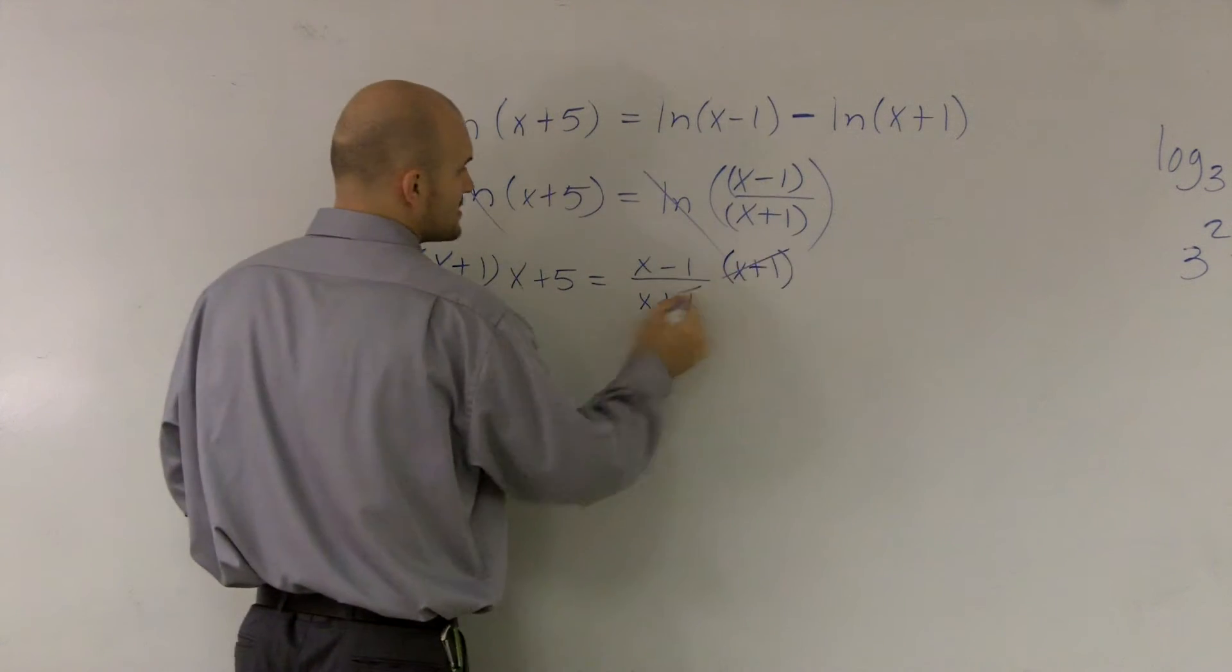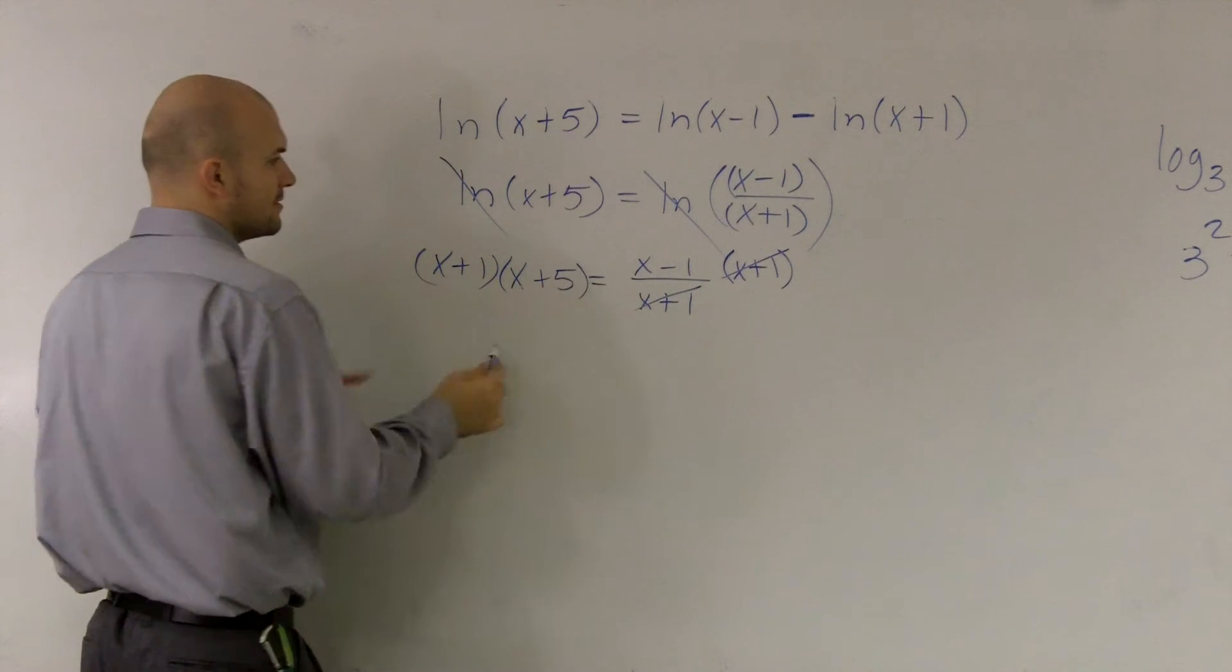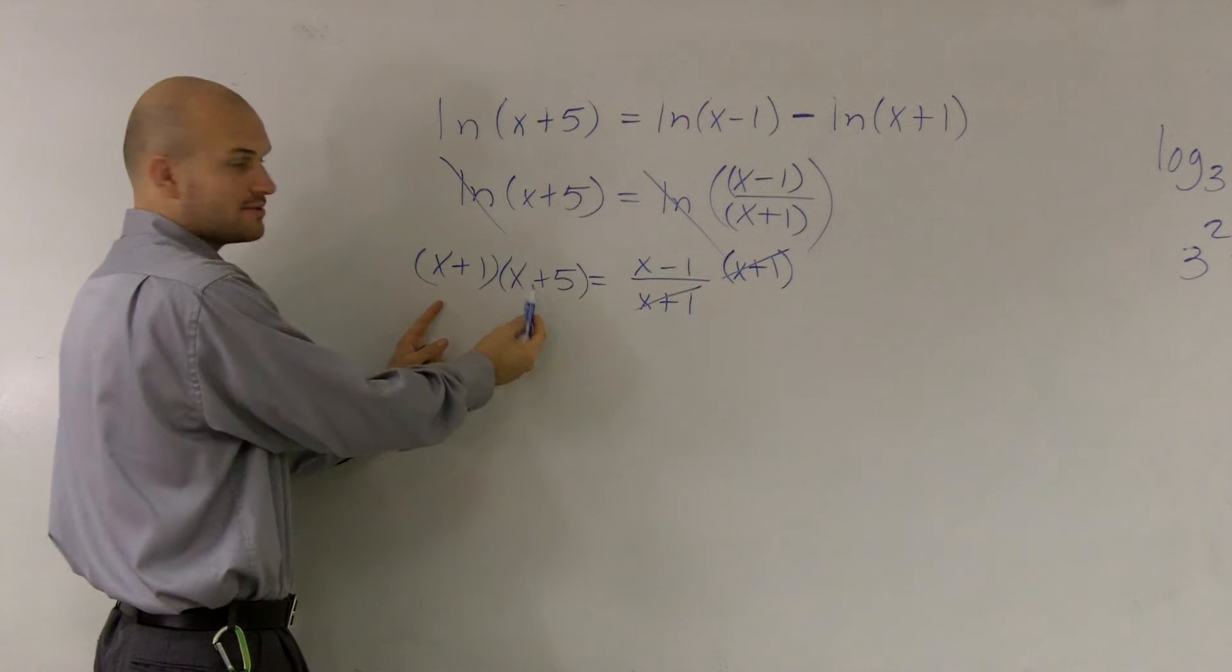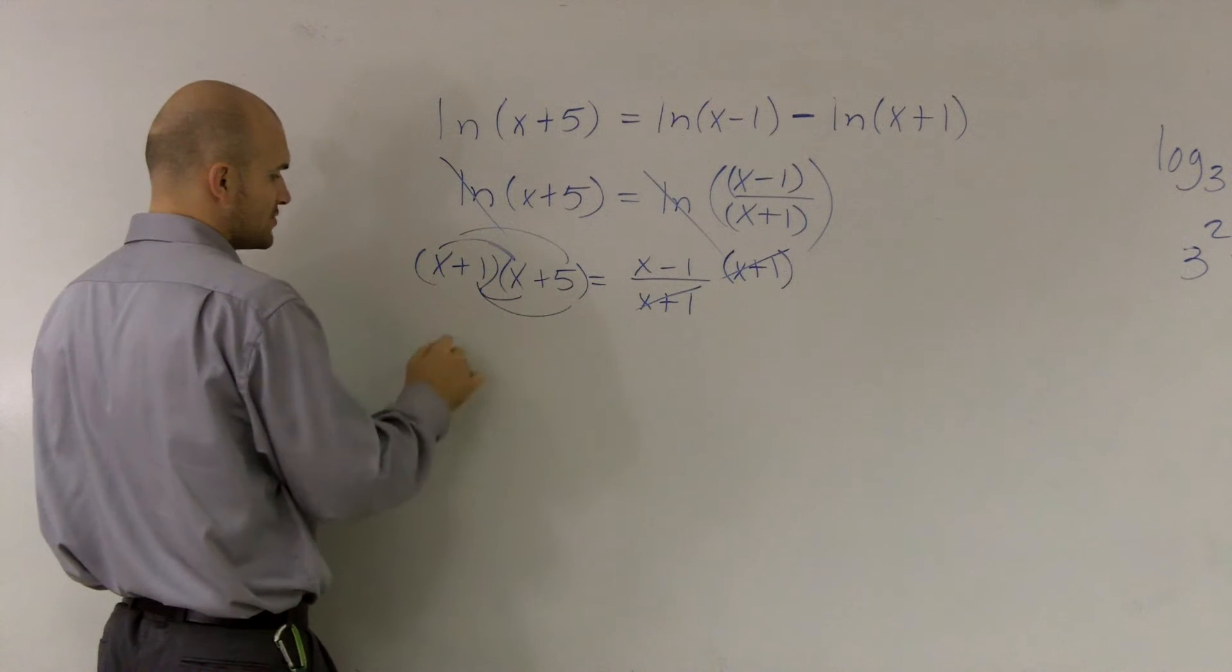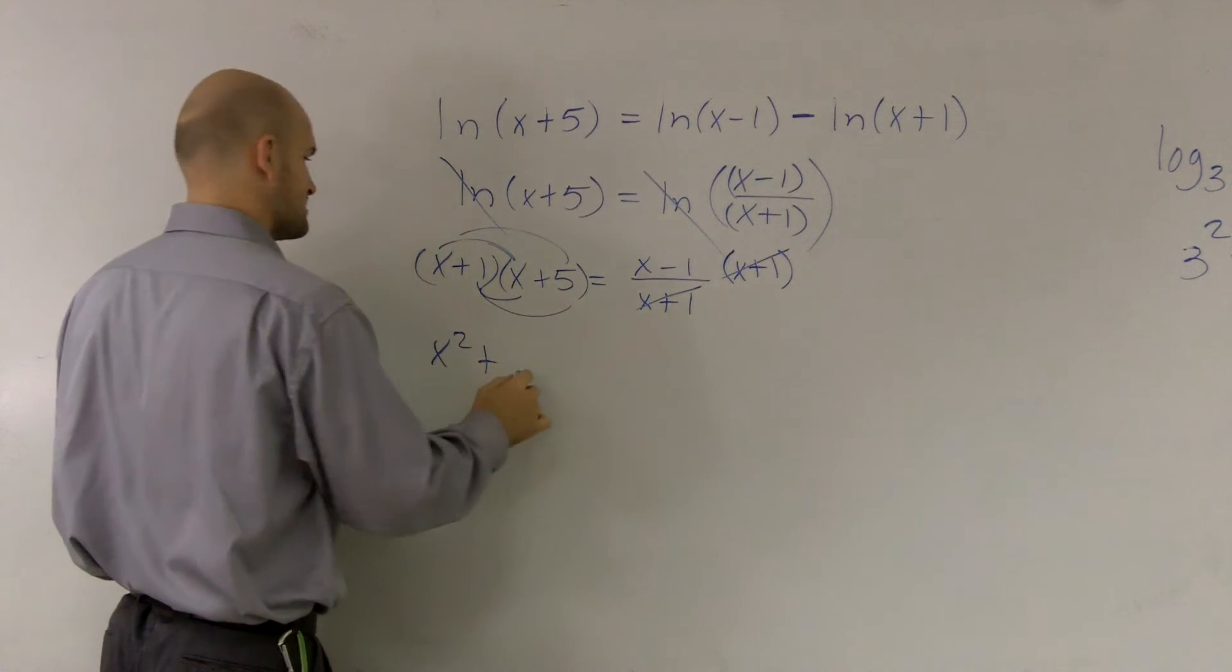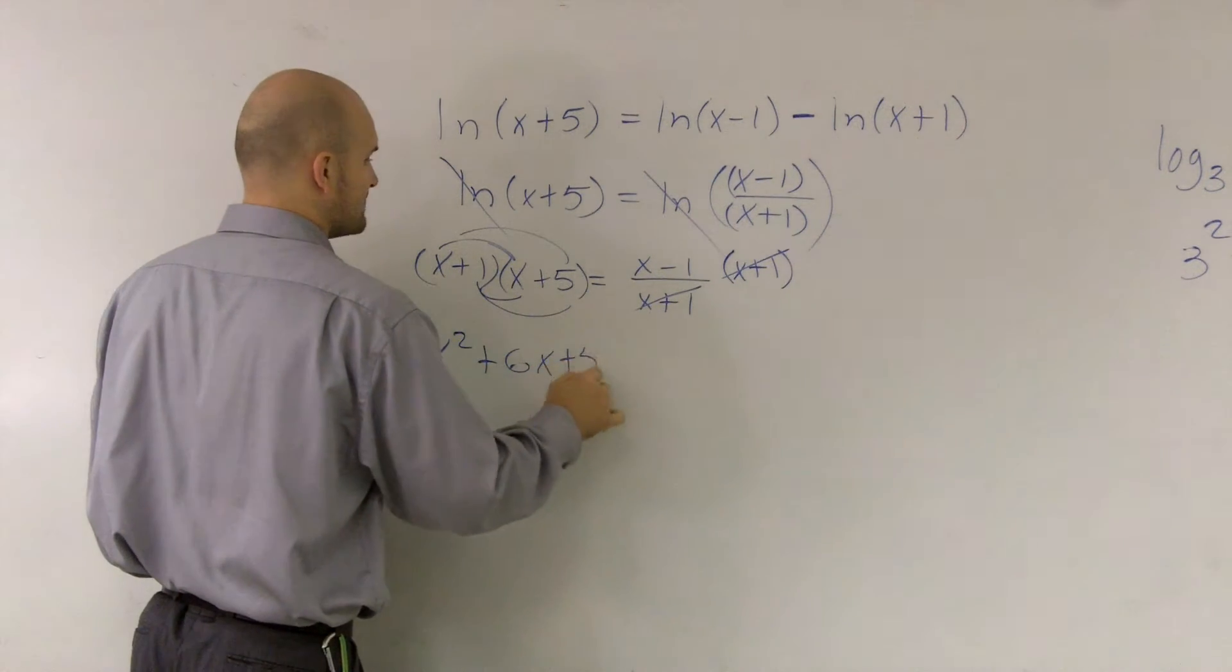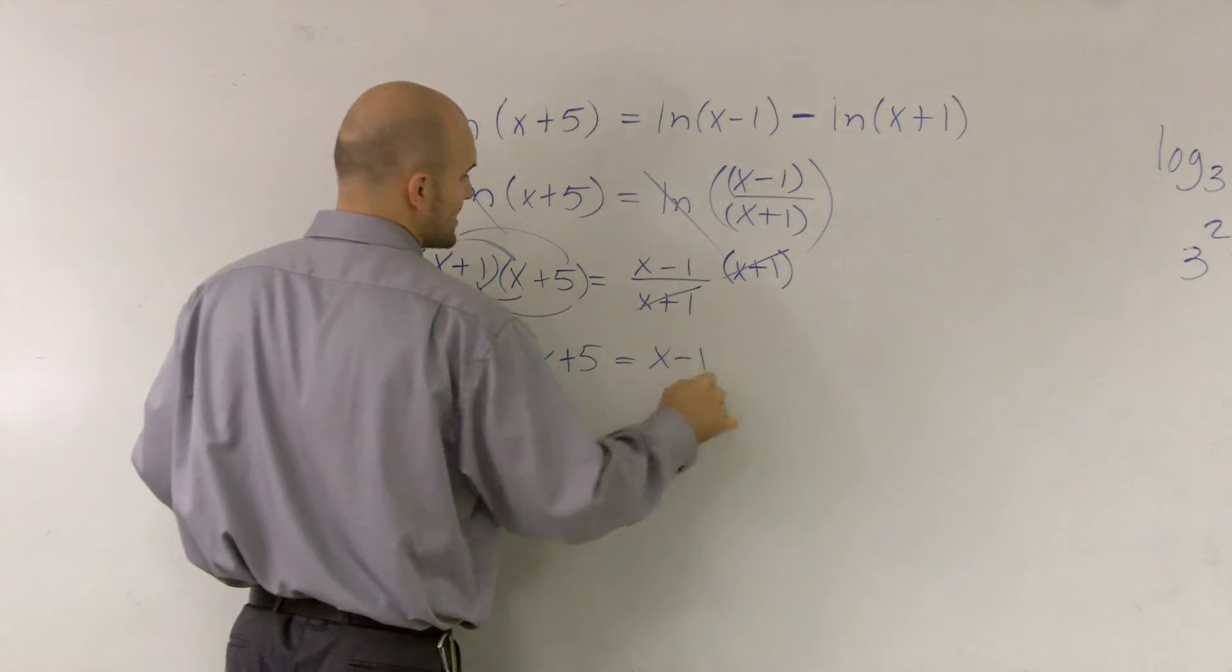So you're going to multiply by (x+1) on both sides. Those are going to cancel out and we're left with a binomial times a binomial. So we could use our FOIL.